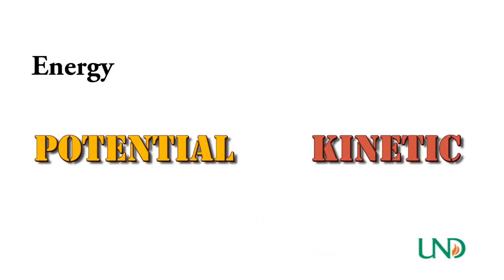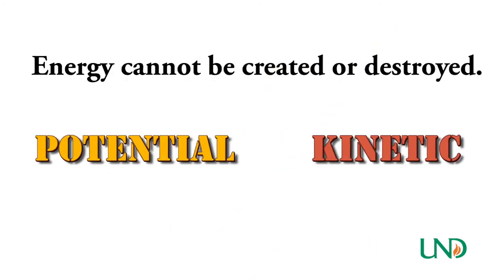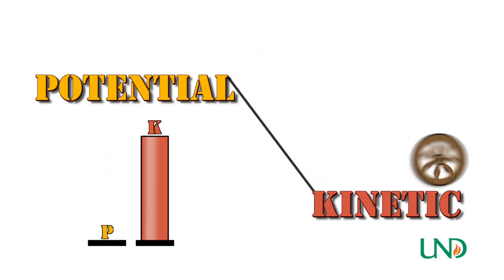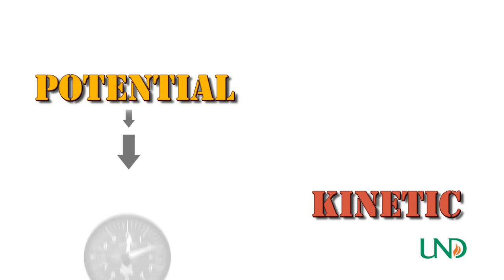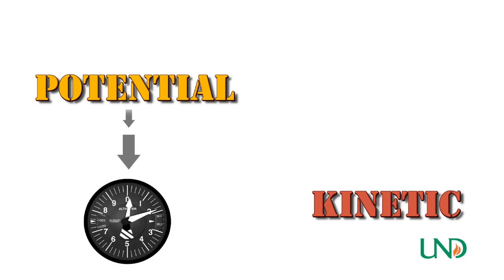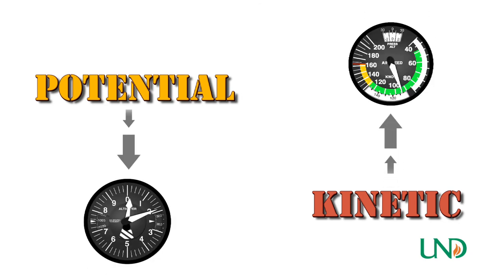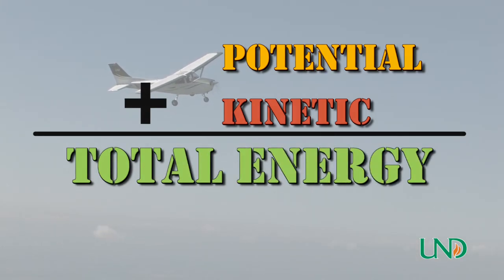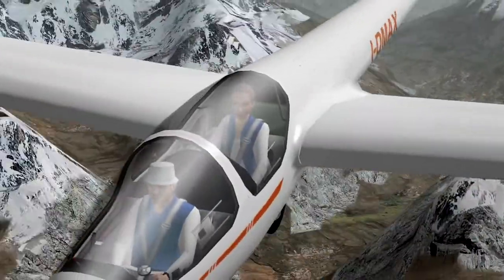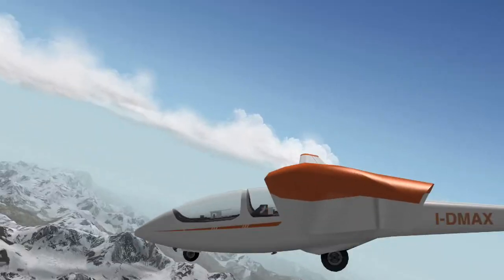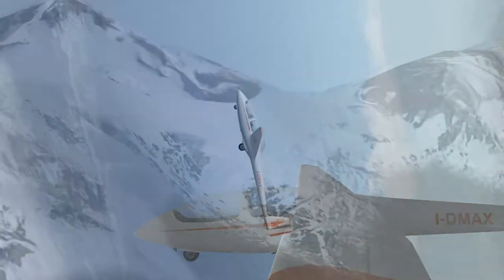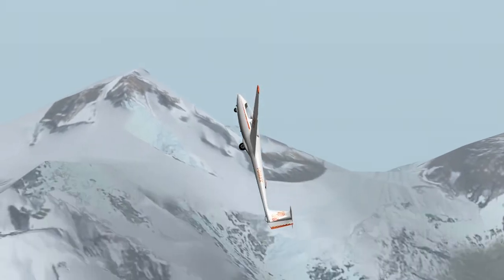According to the law of conservation of energy, energy cannot be created or destroyed, but it can be transferred between types. No system is perfect in terms of these conversions. Potential energy is the energy of position — the aircraft's altitude. Kinetic energy is the energy of motion — airspeed for the pilot. In a perfect system, the sum of these two forms equals the total energy available. Glider pilots absolutely live by the knowledge that a pilot can exchange airspeed for altitude or altitude for airspeed.